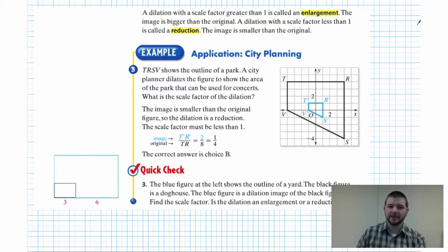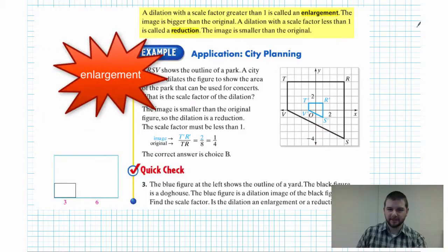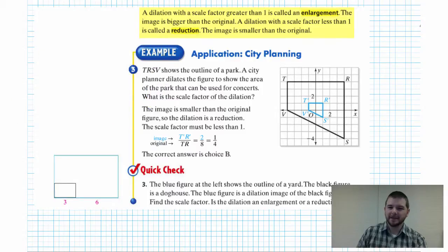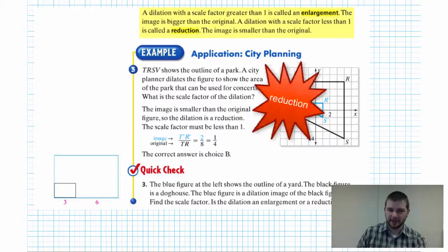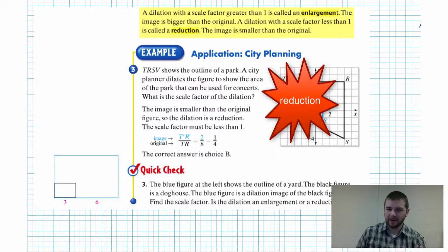A dilation with a scale factor greater than one is called an enlargement. The image is bigger than the original. A dilation with a scale factor less than one is called a reduction. The image is smaller than the original.